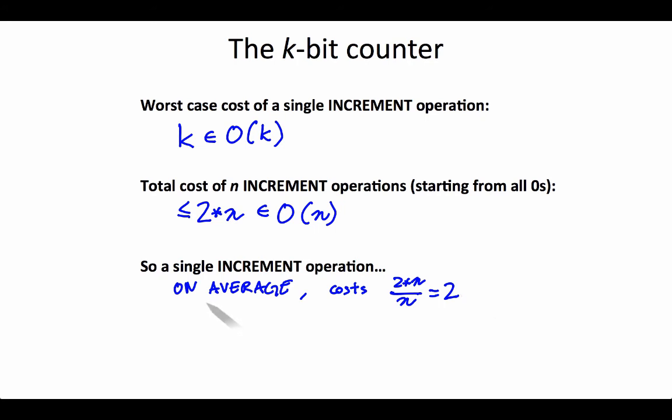However, and this is relatively important, we don't use the word average here when we talk about complexity. So we have a fancy word that we use for this kind of average, which is to say the amortized cost.